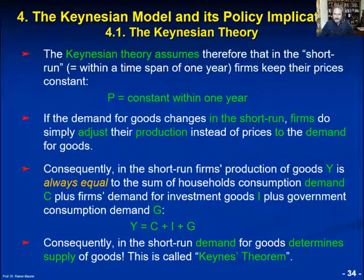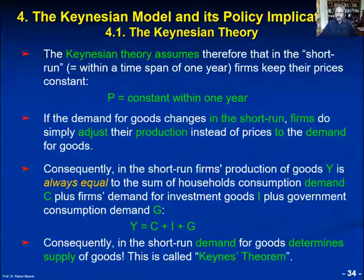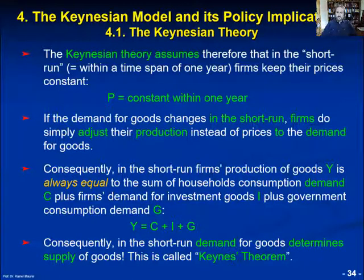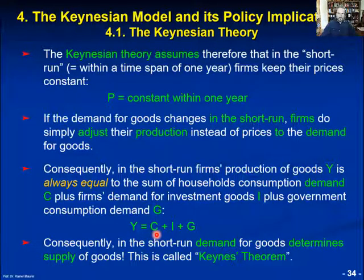An important result of our last lesson was Keynes' theorem. According to Keynes' theorem, the demand for goods determines the supply of goods. The explanation is that since firms keep their prices constant in the short run, they adjust instead their production quantities of goods to the demand for goods. So GDP supply equals always consumption demand of households plus investment goods demand by firms plus government consumption demand by the government.